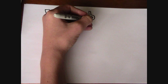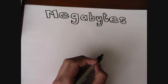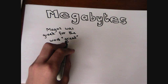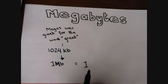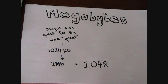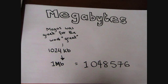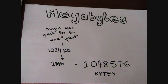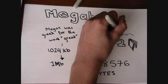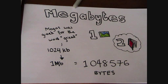The next biggest is a megabyte. Megas was a Greek word for great. 1024 kilobytes are the same as one megabyte, which is the same as 1,048,576 bytes. One megabyte of data is equal to about one photograph or two books.